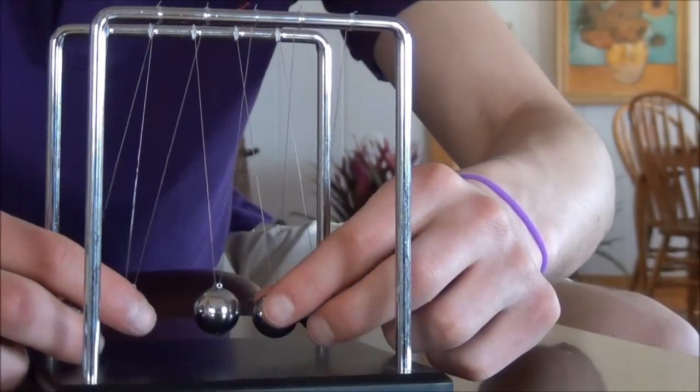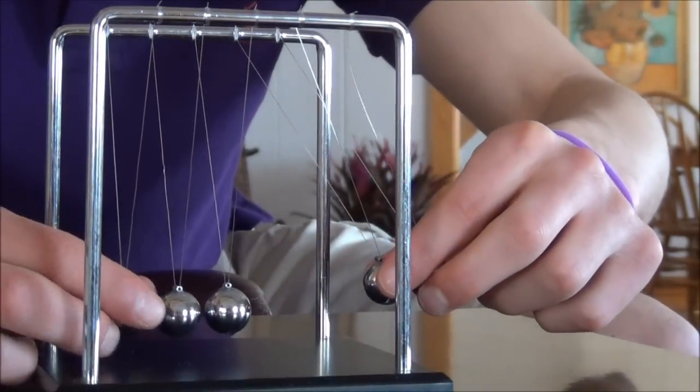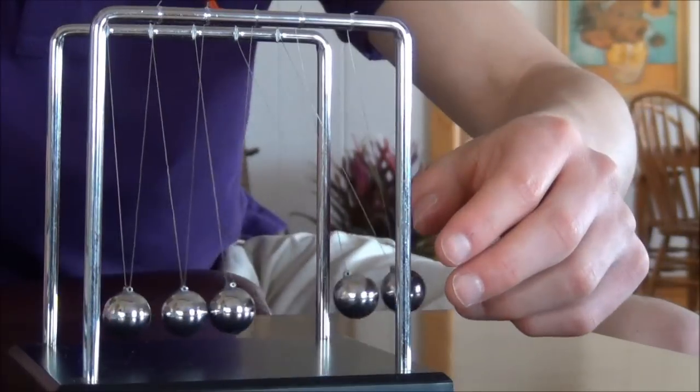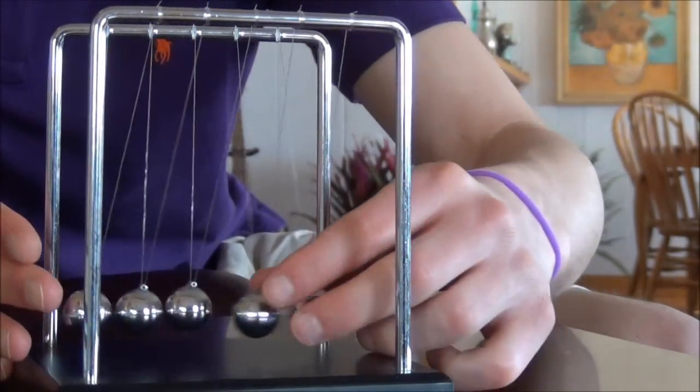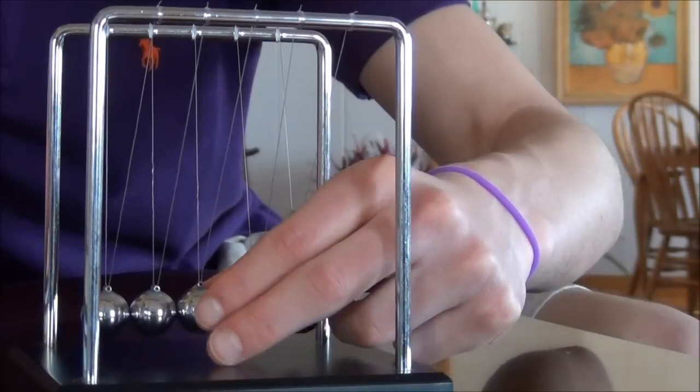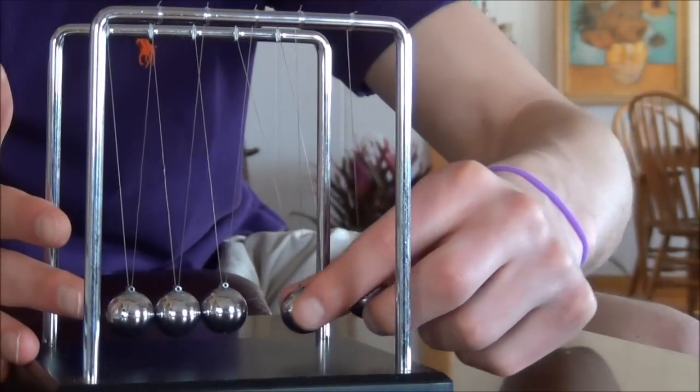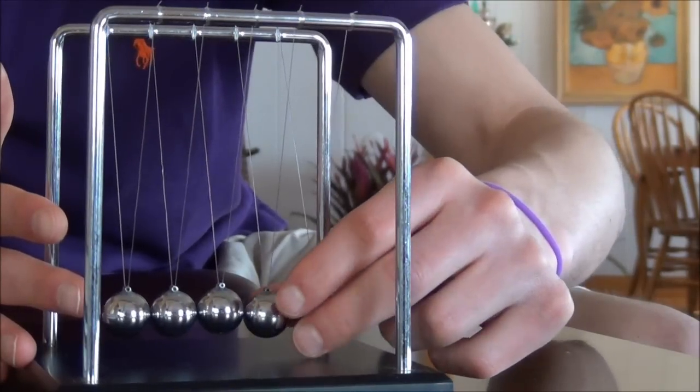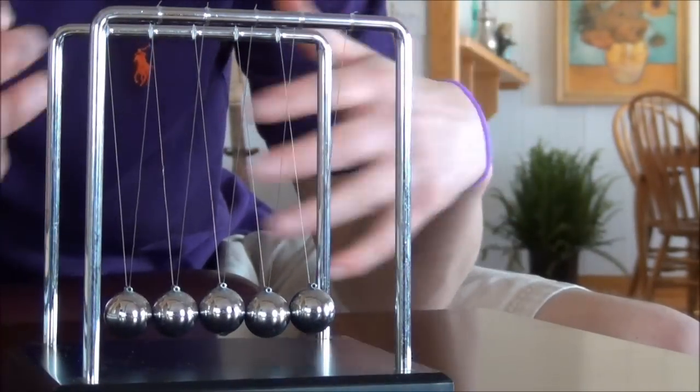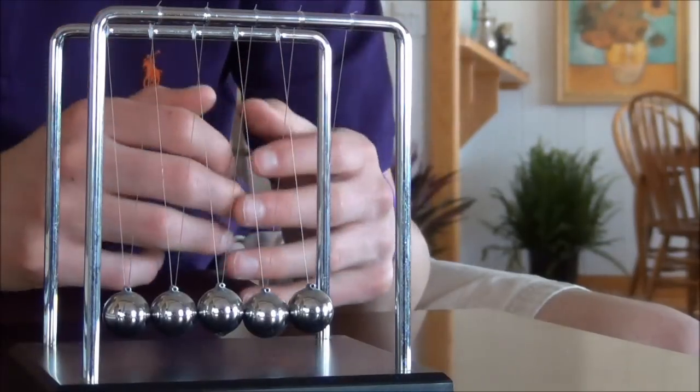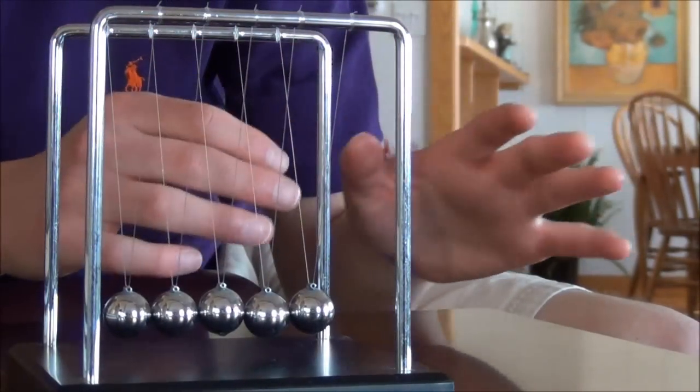So that's why when I displace these two balls, I have two balls come out on the opposite side instead of just one moving twice as fast or instead of three moving at a smaller velocity. It's because we can think of these as actually a series of separate elastic collisions. It's a difficult concept and it's something that can be explained more thoroughly with differential equations and I'm not obviously going to get into that.